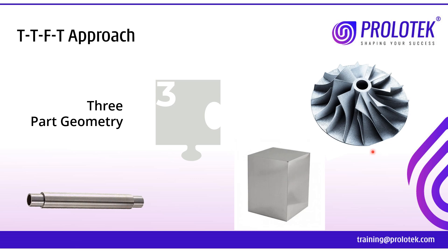The third type of part geometry is called 3D contour — for example, blades having a three-dimensional contour. You take any part available in the world today, and it will be one of these three geometries, or a combination. For instance, a hole with an axis is an axis symmetric feature, a top planar surface is a prismatic feature, and blades are an example of 3D contours.